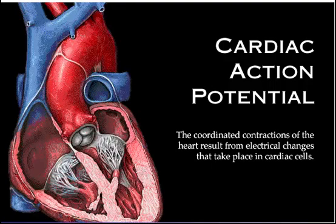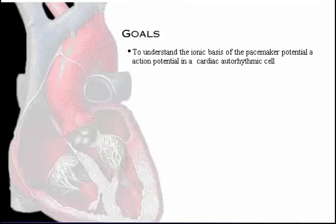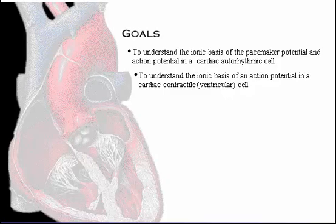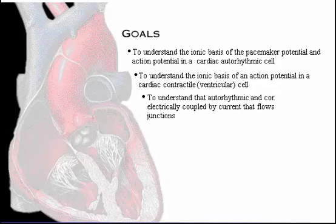The coordinated contractions of the heart result from electrical changes that take place in cardiac cells. Your goals for learning are to understand the ionic basis of the pacemaker potential and the action potential in a cardiac auto-rhythmic cell, to understand the ionic basis of an action potential in a cardiac contractile cell, and to understand that auto-rhythmic and contractile cells are electrically coupled by current that flows through gap junctions.